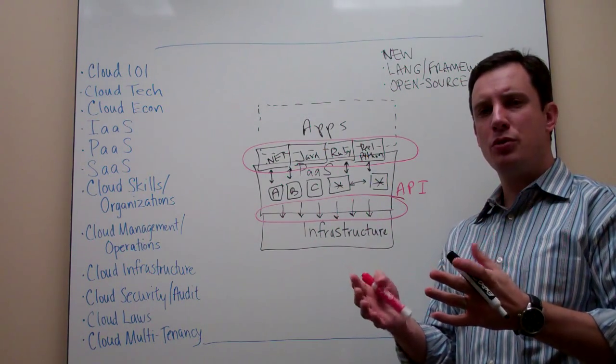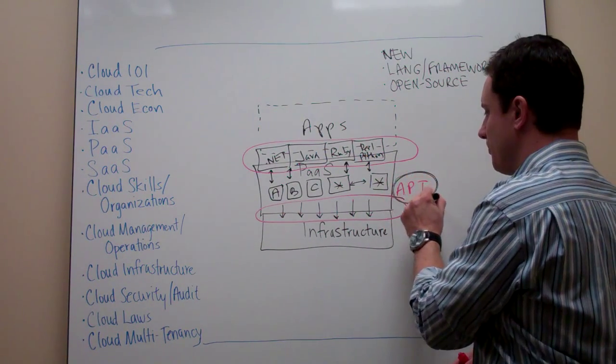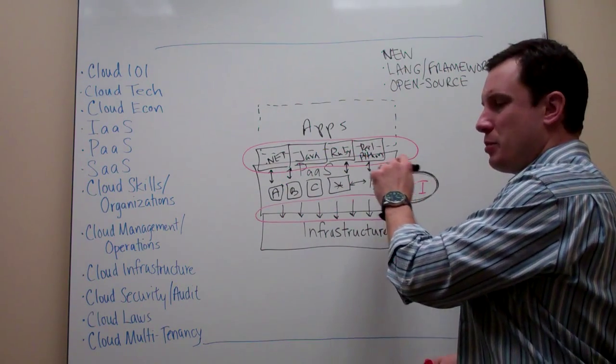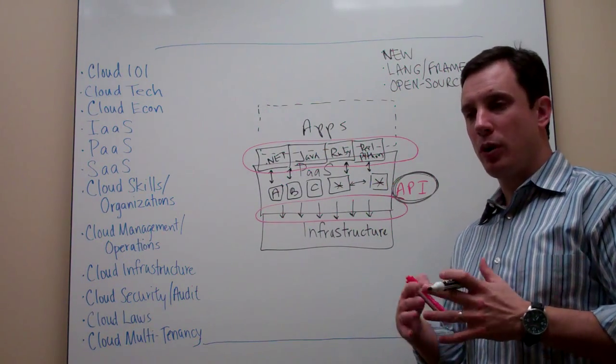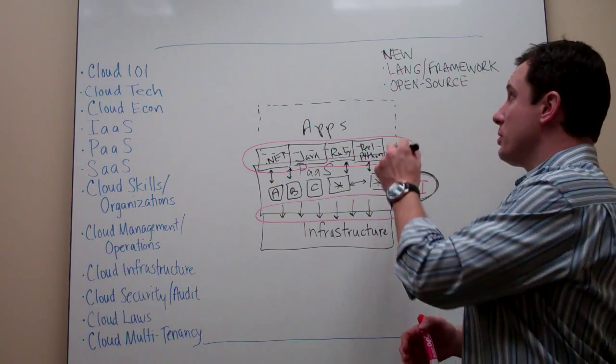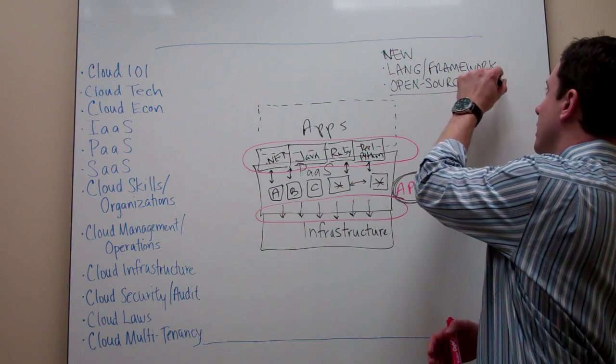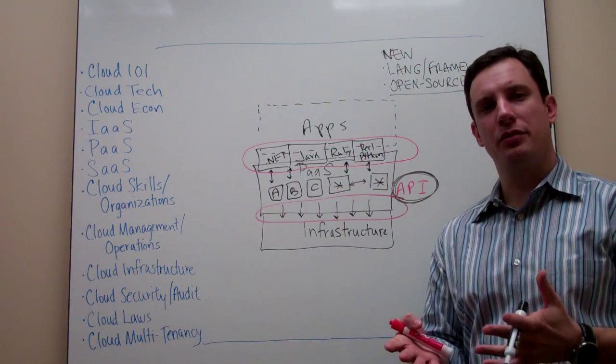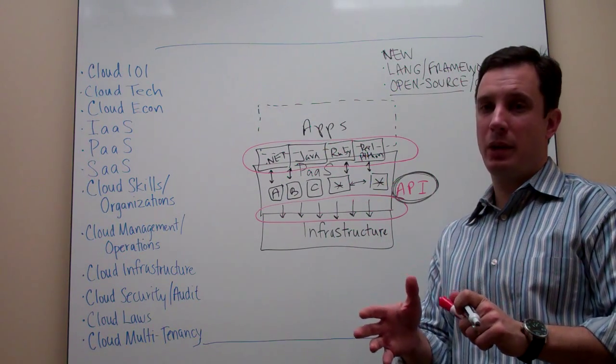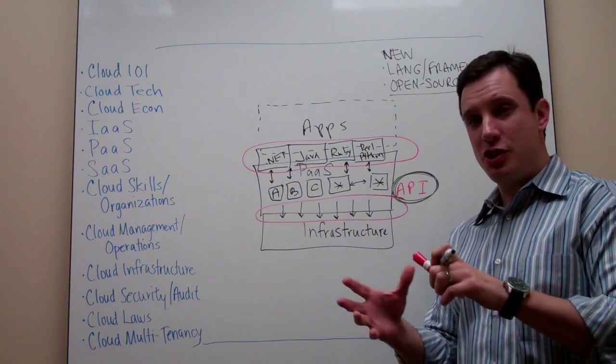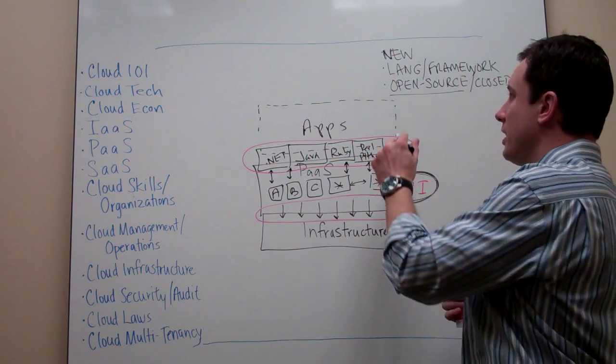But ultimately, they both have ways to have these APIs be able to access what happens within the PaaS. So in some cases, organizations want to strictly work with open source. Others are okay with more closed environments that have more direct support models. But as long as they can get to the application framework the way they want to, they can manipulate it and change it the way they want to, that tends to be that next big critical thing.